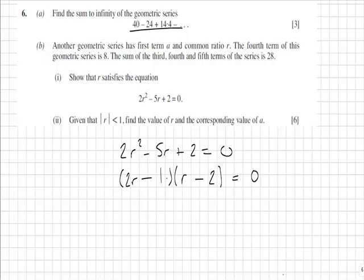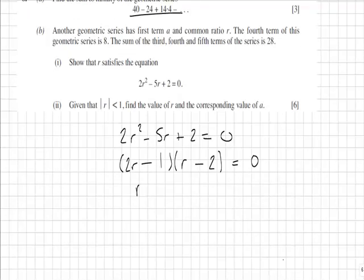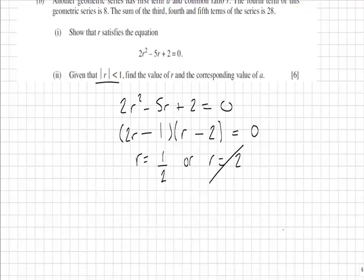This gives us a value of r equaling 1/2 in the first bracket, or r equaling 2. Now we need to discount that because we're shown that r has to be less than 1, so we now know r is 1/2. But we also knew from previously that ar³ was equal to 8.